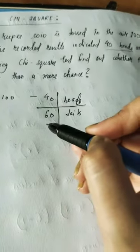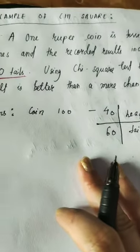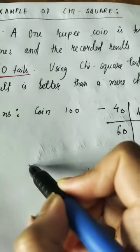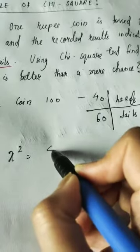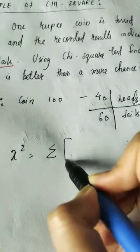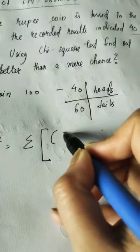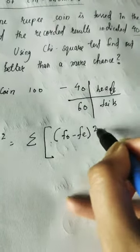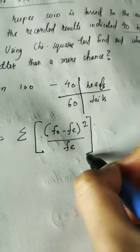What will be the expected frequency here? Because we know the formula for Chi-Square is the summation of observed frequency minus expected frequency, whole square, divided by expected frequency.